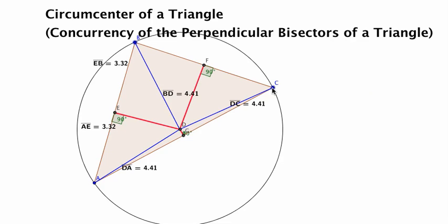So, to recap, the properties of a circumcenter are first, that it is the point of intersection of all three perpendicular bisectors of the triangle.